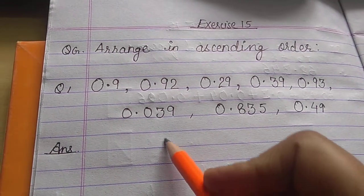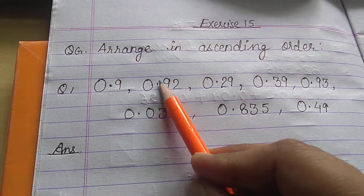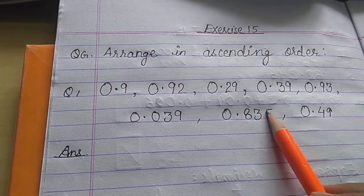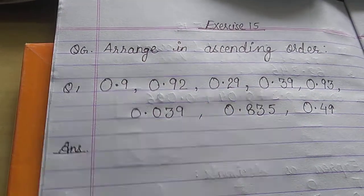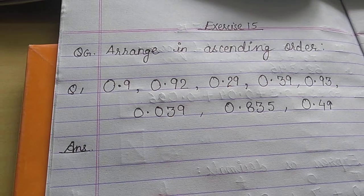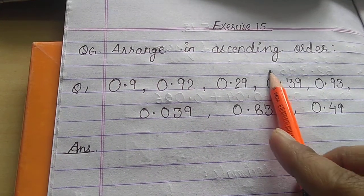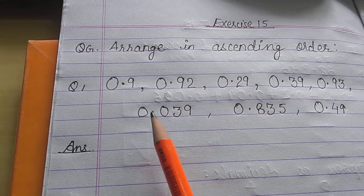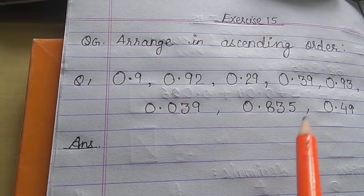Now students, let us learn how to arrange decimal numbers in ascending order. If you know how to compare decimal numbers, it will be very easy for you. For ascending order, we start from the smallest number and then go to the biggest number.